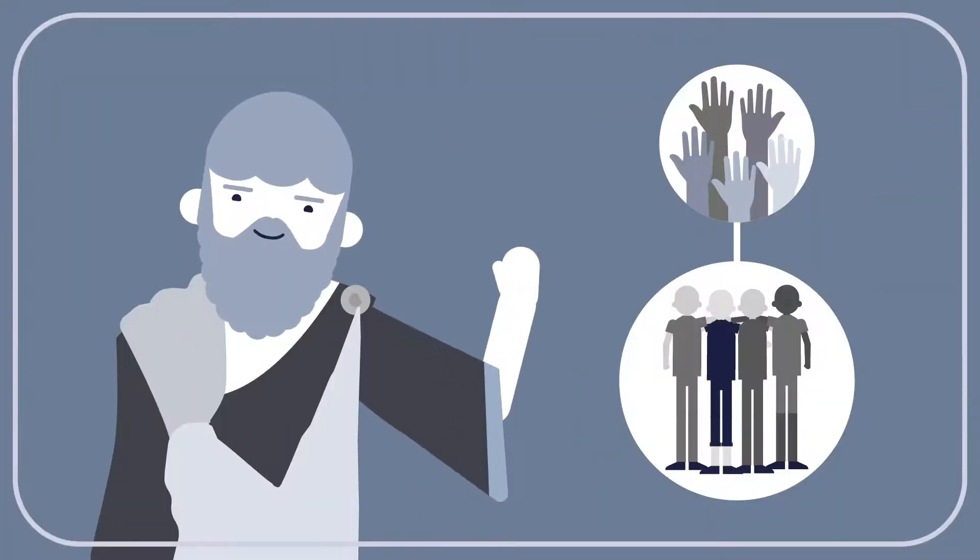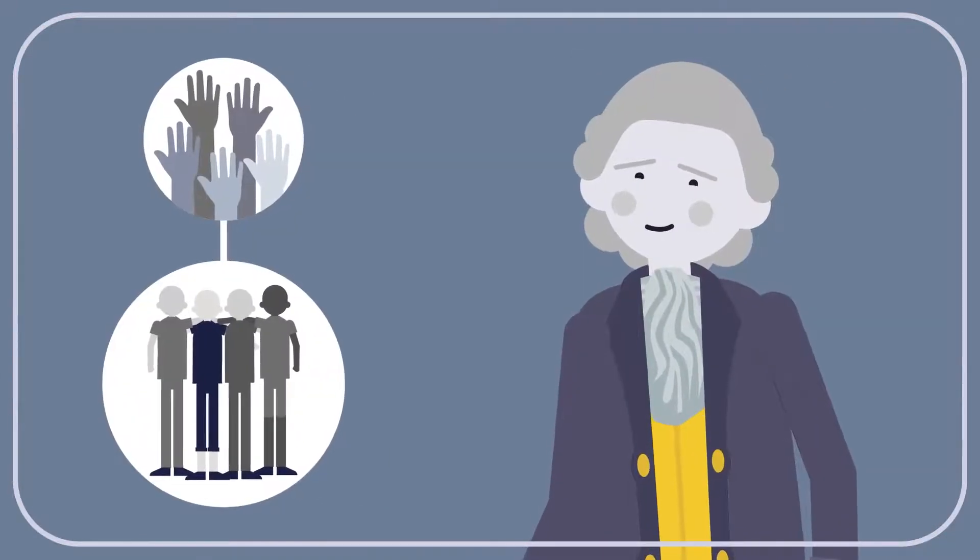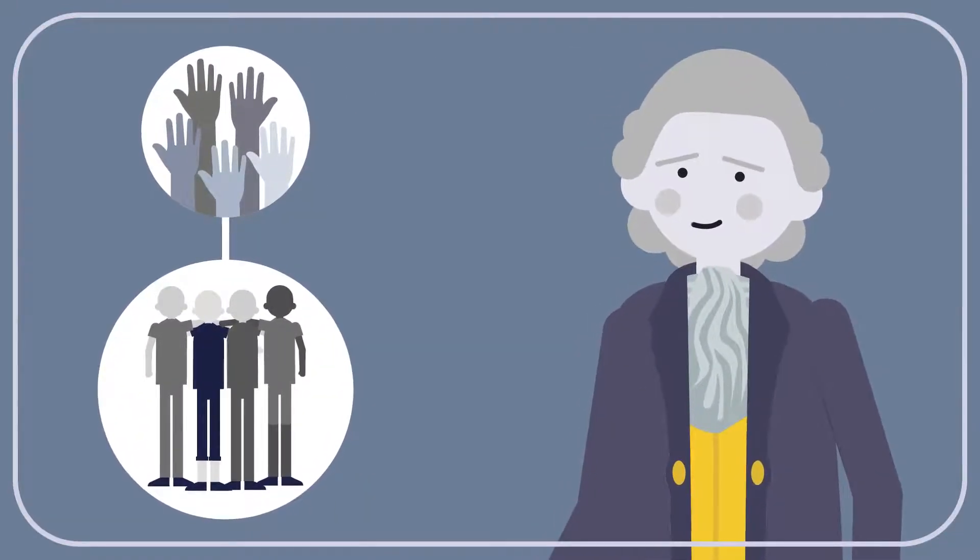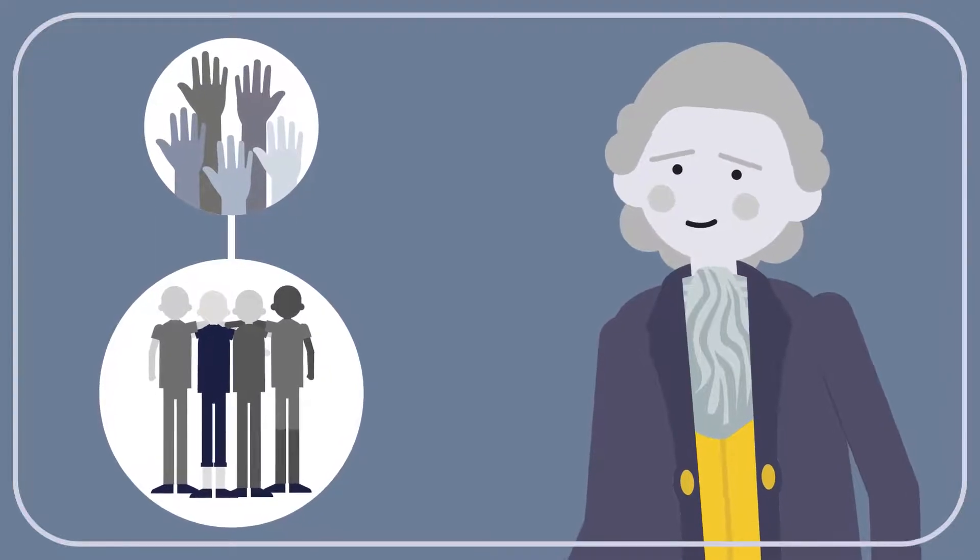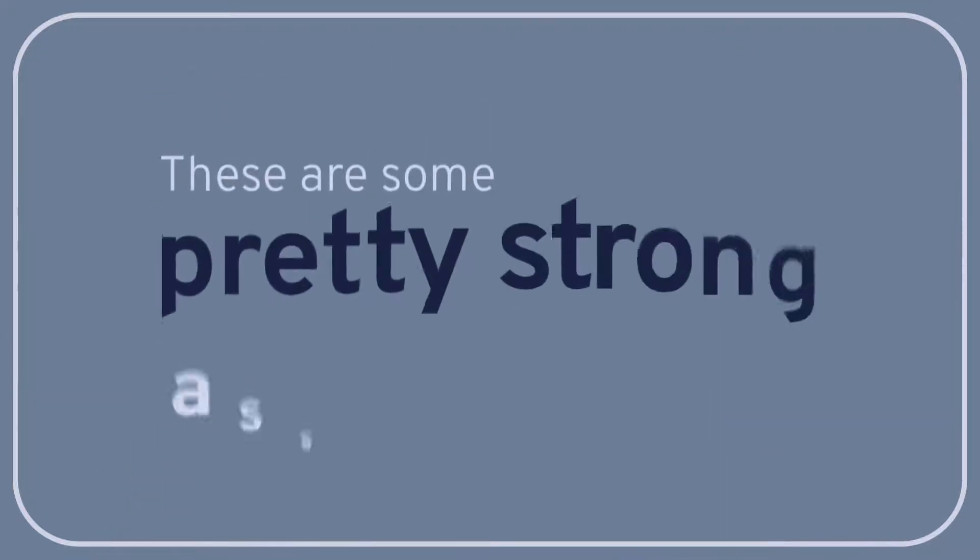Contrary to Plato's pessimism, Condorcet's jury theorem suggests that democracy really does have the best chance of leading to the best outcomes for society as a whole. Of course, it rests on some pretty strong assumptions.